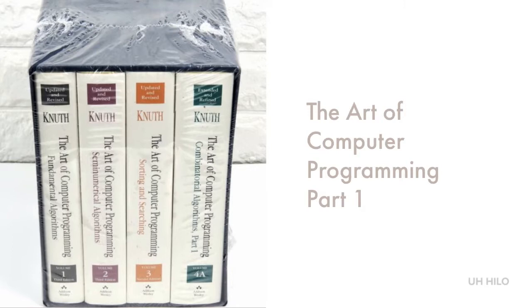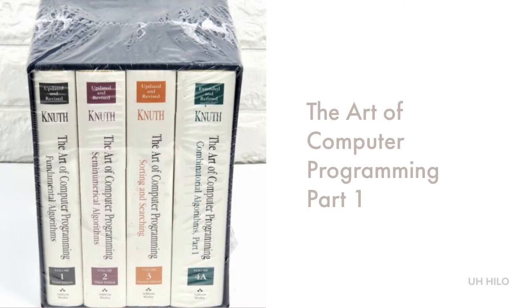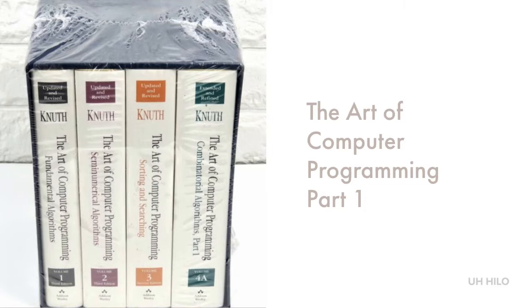The Art of Computer Programming is a series of books written by Donald Knuth. He began the project in 1962 and had originally planned five volumes. There are now seven volumes planned, but only the first three volumes are complete. Volume 4A was published in 2011 and Volume 4B was expected in 2019.